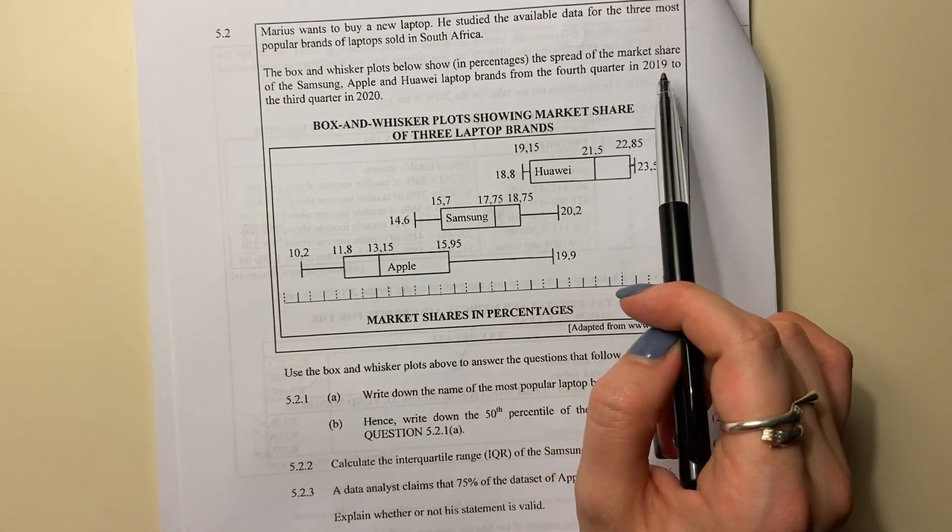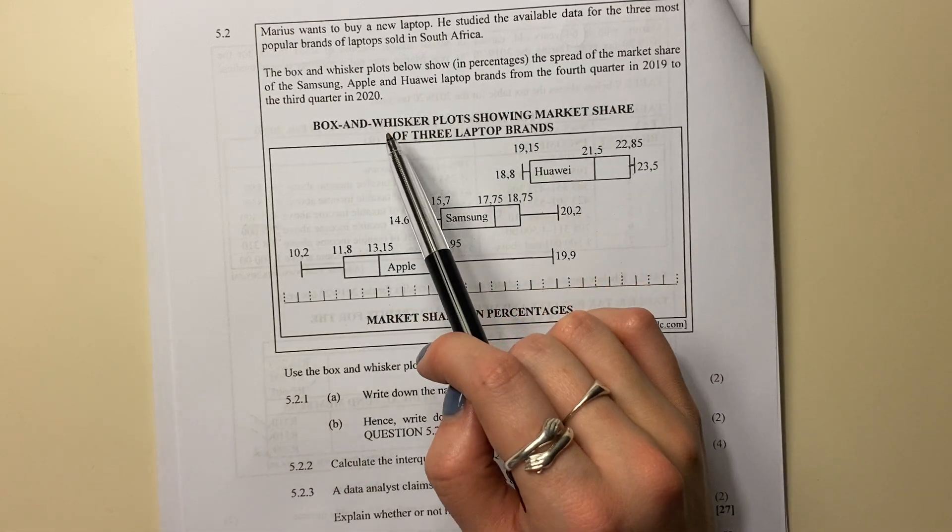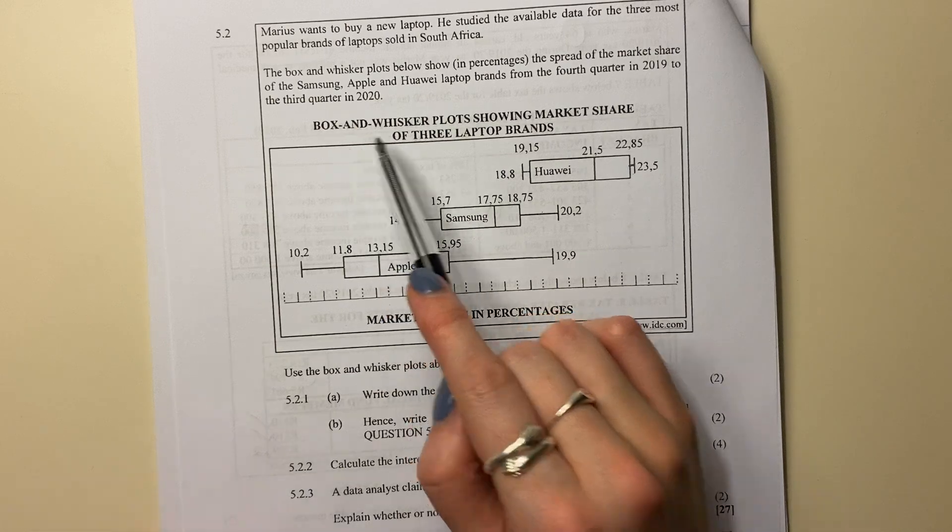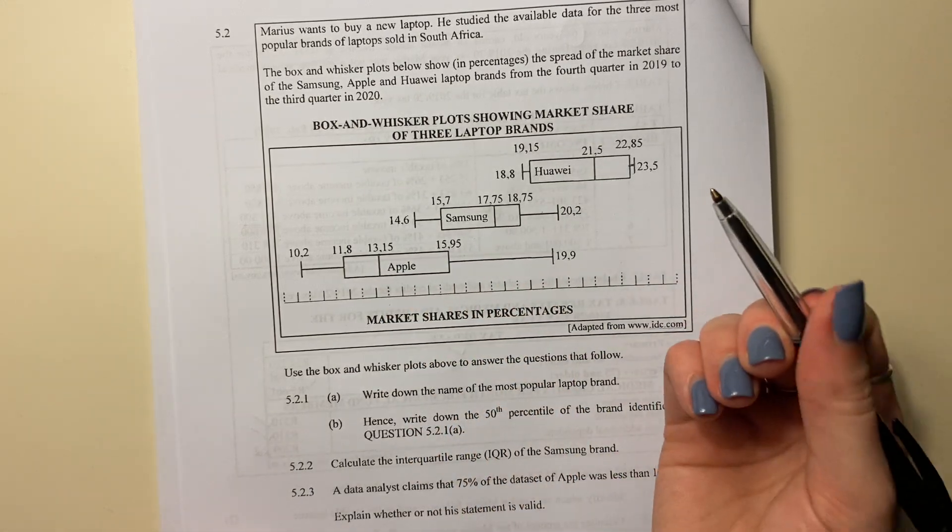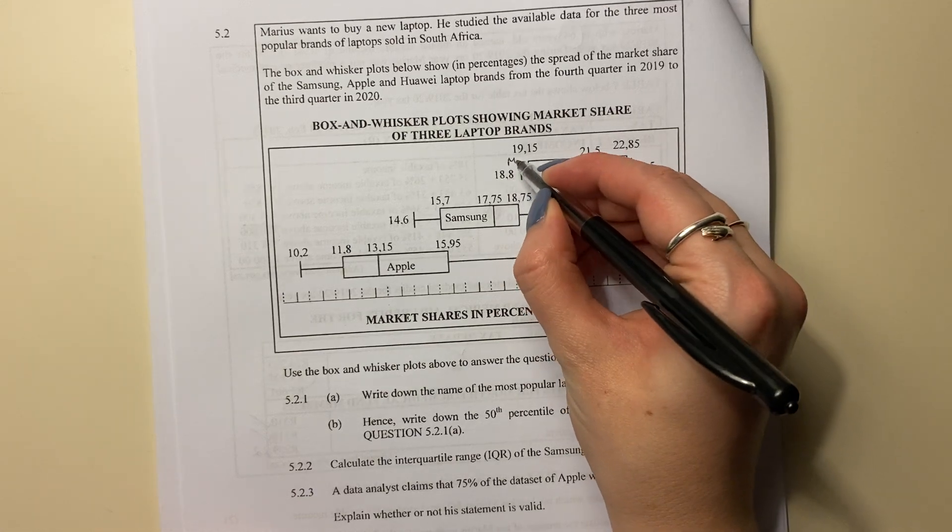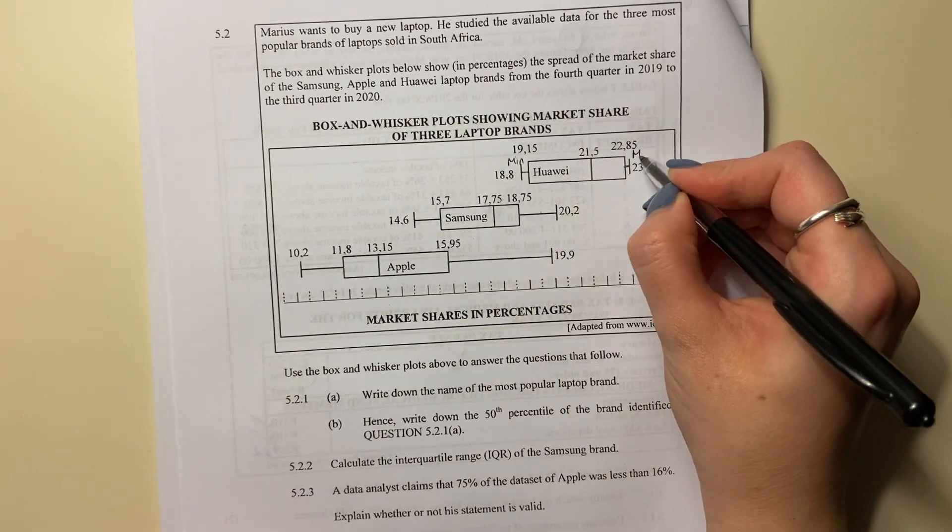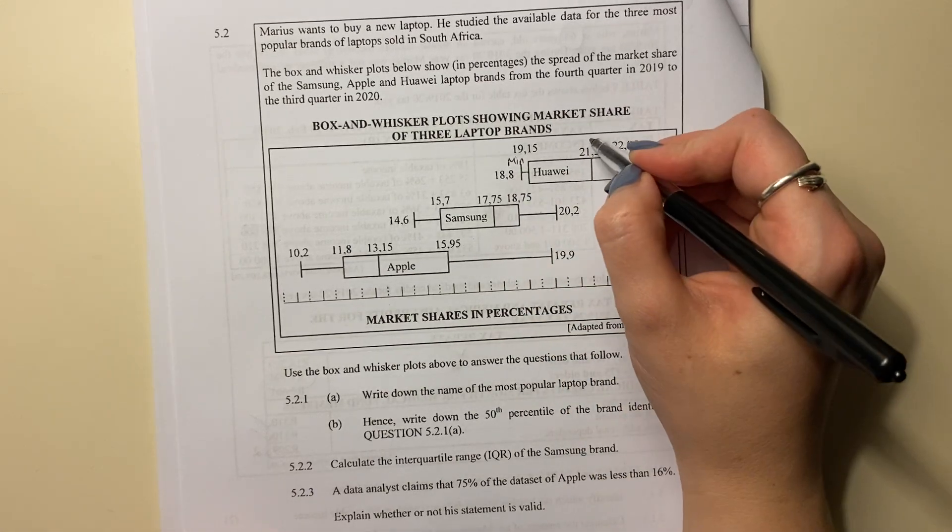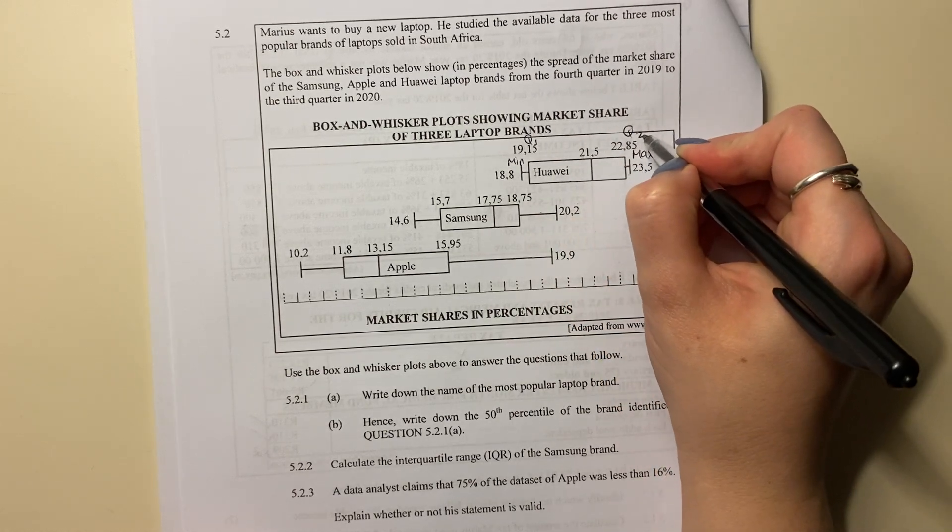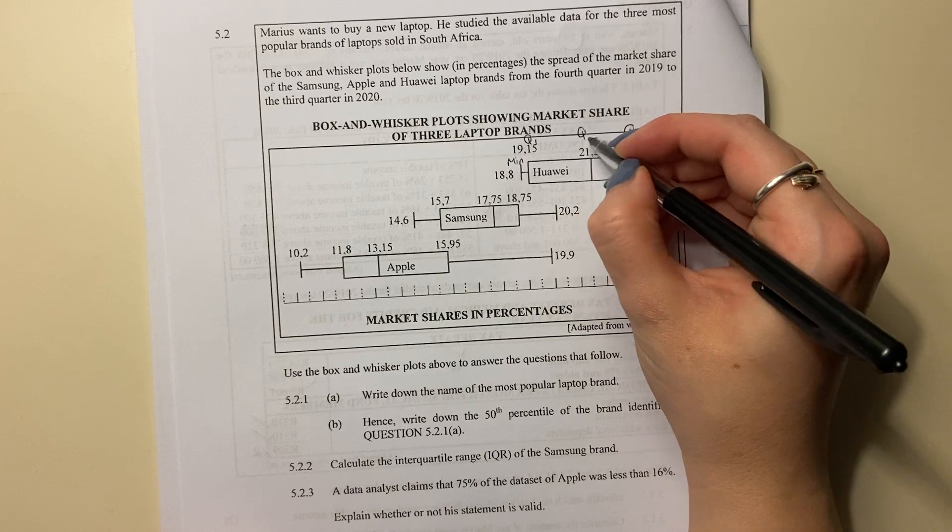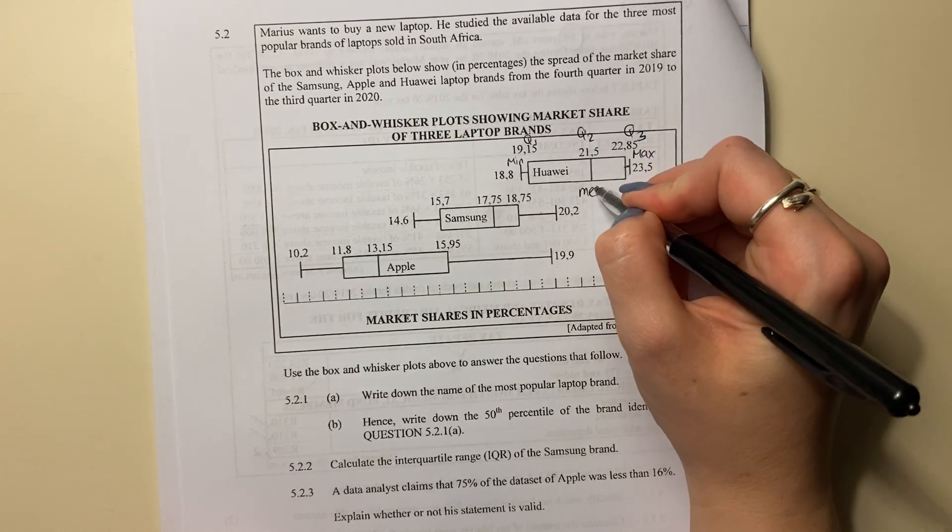I'll speak to that in more detail now. Of the Samsung, Apple, and Huawei laptop brands from the fourth quarter in 2019 to the third quarter in 2020. Okay, so box and whisker plots. Remember, the box and whisker: this would be your minimum, that'd be your maximum. This is what we call quartile one, that's what we call quartile three, this one's quartile two but can also be called my median.